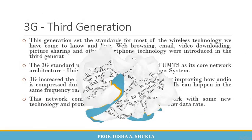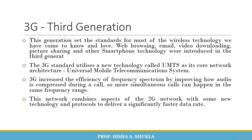Moving on to the third generation, that is 3G. This generation sets the standard for most of the wireless technology that we have come to know and love. Web browsing, email, video downloading, picture sharing, and other smartphone technologies were introduced in the third generation. The 3G standard utilizes a new technology called UMTS, that is Universal Mobile Telecommunication System, as its core network architecture. 3G increased the efficiency of frequency spectrum by improving how audio is compressed during a call, so more simultaneous calls can happen in the same frequency range. This network combines aspects of 2G with new technology and protocols to deliver a significantly faster data rate.